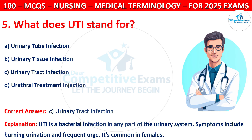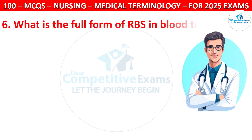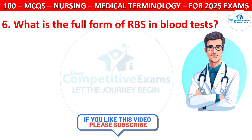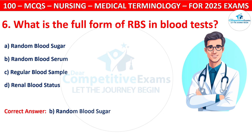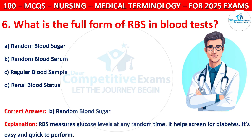Question 6: What is the full form of RBS in a blood test? Options are: Random Blood Sugar, Random Blood Serum, Regular Blood Sample, or Renal Blood Status. The correct answer is A, that is Random Blood Sugar. RBS measures glucose level at any random time. It helps screen for diabetes. It is easy and quick to perform.